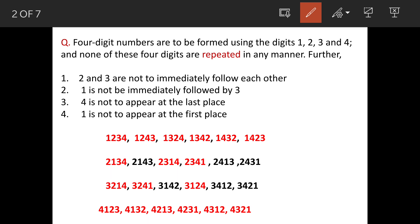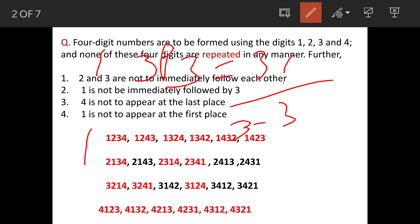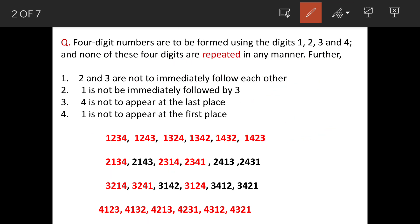We will write the numbers physically. When 1 is at the first place, the remaining three numbers can be arranged in 3P3 manner, which equals factorial 3 divided by factorial (3 minus 3), giving 6 arrangements. Similarly, when 2 is at first place, 6 are possible; when 3 is at first place, 6 are possible; and when 4 is at first place, 6 arrangements are possible.